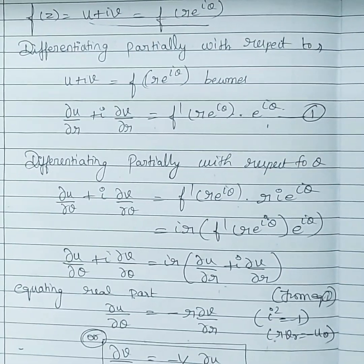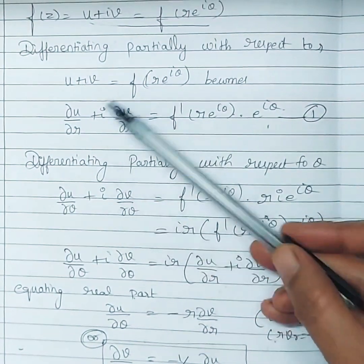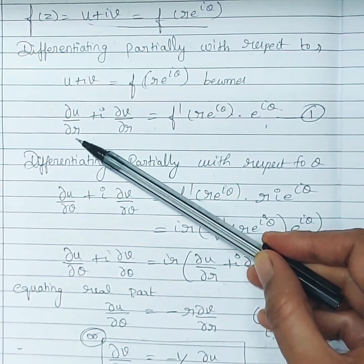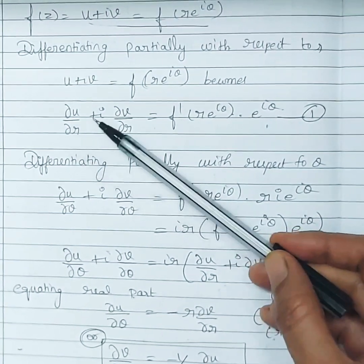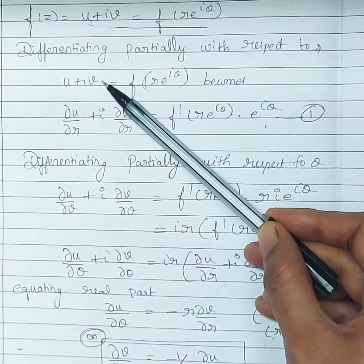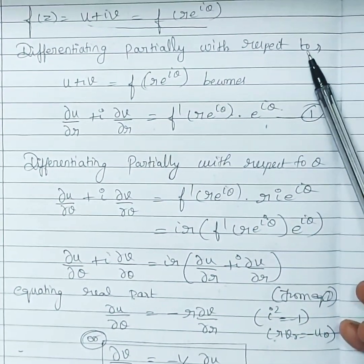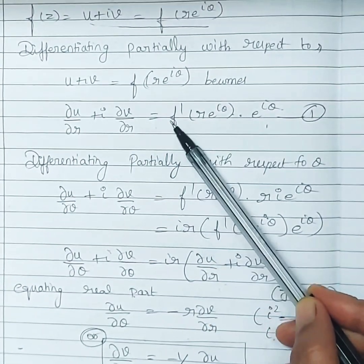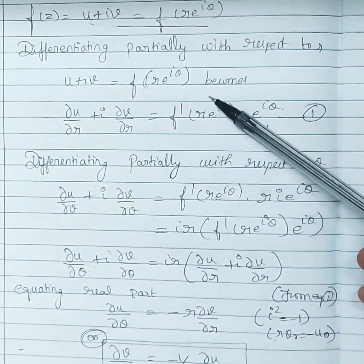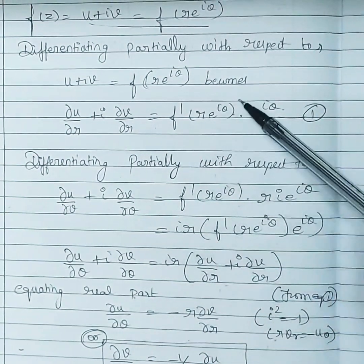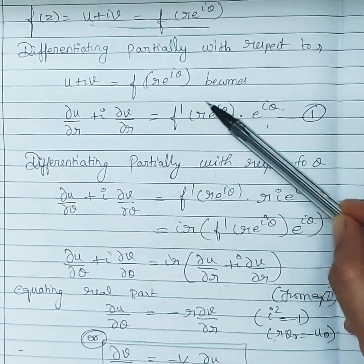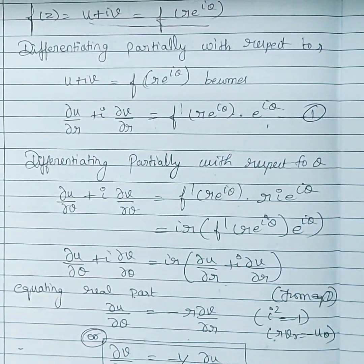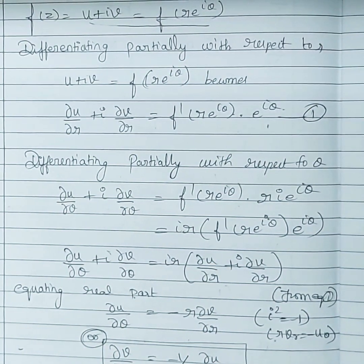Differentiating u + iv = f(re^{iθ}) with respect to r: ∂u/∂r + i·∂v/∂r = f'(re^{iθ})·e^{iθ}, since e^{iθ} is constant when differentiating with respect to r. Differentiating with respect to θ: ∂u/∂θ + i·∂v/∂θ = f'(re^{iθ})·ir·e^{iθ}, since r is constant and the derivative of e^{iθ} with respect to θ is i·e^{iθ}.